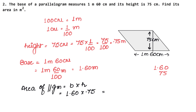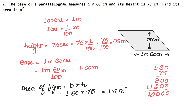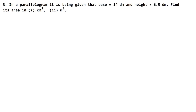Multiplying 1.60 × 0.75: working through the arithmetic gives us 1.2 m². So the area of this parallelogram is 1.2 m².